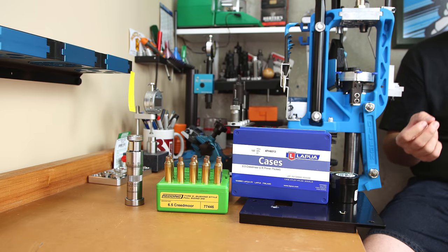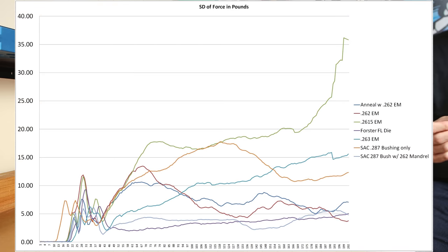Our next graph here, I think is the most telling. What I'm charting here is the standard deviation of the entire 11 samples as the seating process is occurring. So we can tell which process is yielding the most consistent results. Assuming our reloader's adage that consistency is always what we're looking for, this graph to me says everything. Our Forester full length sizing die by far had the best standard deviation overall. Throughout the rest of the seating process, the standard deviation in the difference in force values is less than five for our Forester full length sizing die. Not much behind it is the Short Action Customs 287 bushing with the 262 mandrel. I think it's very telling that our standard full length sizing die gave us the lowest amount of variation.